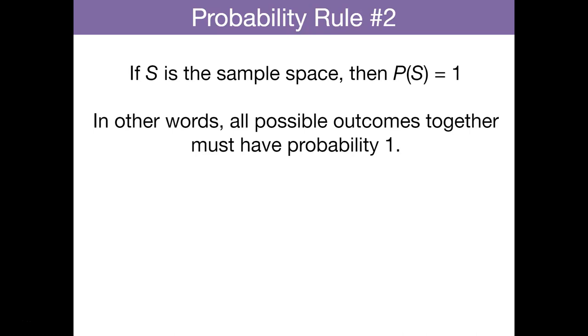The second rule of probability is if S is the sample space, that is, the list of all possible outcomes, then the probability you find something in that sample space is 1. If you were to take all the possible outcomes together, they must have a probability of 1.